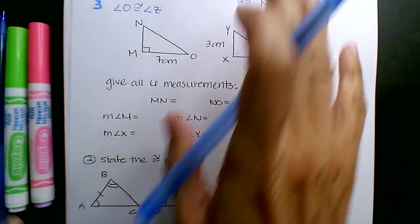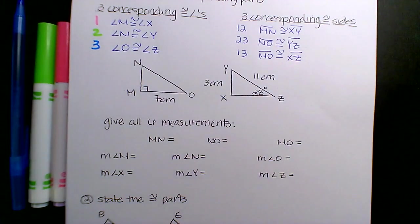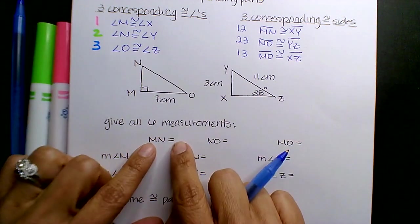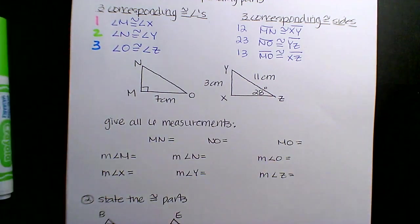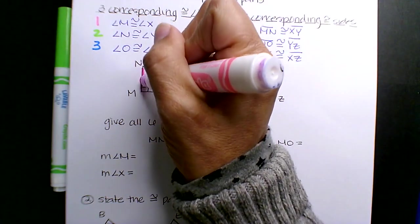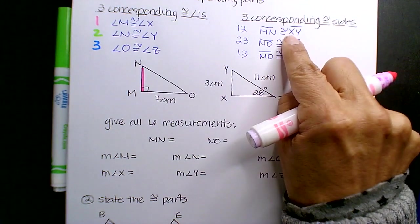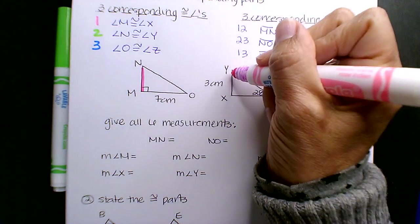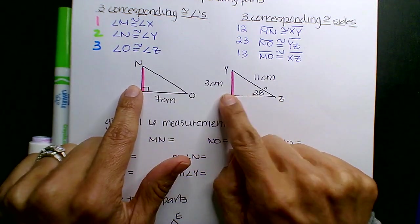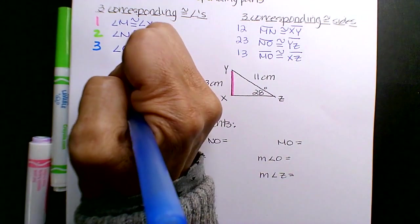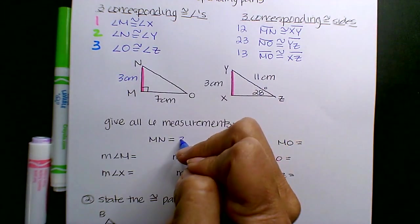So look, how does it now increase? We start applying length and degree numbers. Okay, so the length MN is this length here. So this is MN. MN correlates to XY. It corresponds. So whatever length XY is, that's the length of MN. So this is 3 centimeters.